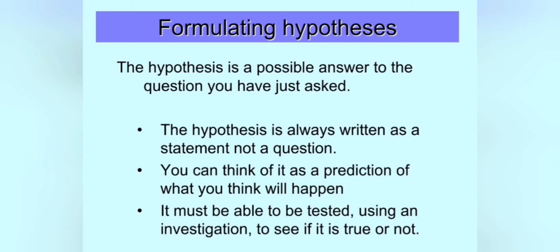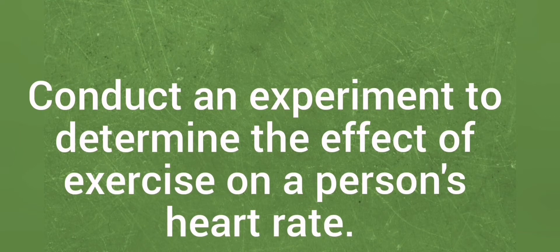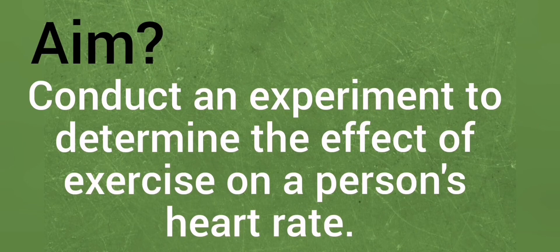Let's do an example. So let's say I give you an experiment and I say you need to conduct an experiment to determine the effect of exercise on a person's heart rate. And then I say to you, okay, what's the aim? Now the aim is the easiest thing. All you need to do is look at the instruction like the sentence on the screen now. Take your highlighter and find the word 'to'.